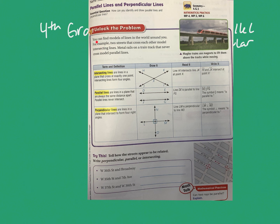Let's unlock the problem. You can find models of lines in the world around you. For example, two streets that cross each other model intersecting lines, and metal rails on a train track that never cross model parallel lines.